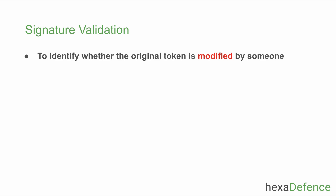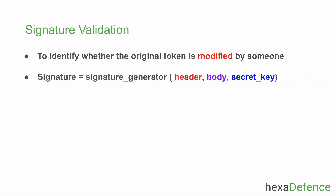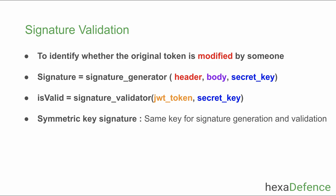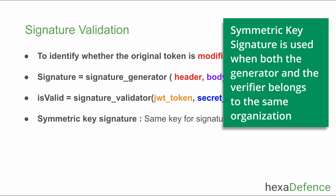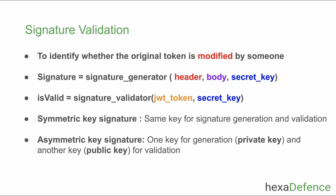The signature section is validated to identify whether someone has modified the token after it was created by the identity provider. Signature generation uses standard algorithms requiring the token header, body, and secret key. There are two types of signatures: symmetric and asymmetric. Symmetric key signatures use the same secret for both generation and verification, suitable when both parties belong to the same organization. For different entities, asymmetric key signatures are used — a private key signs the token and a public key verifies it. This is the most widely used method, and our demonstration uses asymmetric key signature verification.